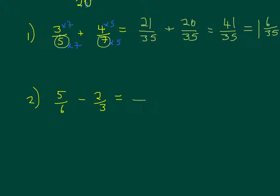For this one, my common denominator — if you picked 18 or 12 that would work, but actually 6 is the lowest common multiple because 6 is in the 6 times table and 3 is in the 6 times table. This 6 here has been times by 1, so it hasn't really changed — I don't need to change the 5, so that stays the same. This 3 has changed to 6, so I've times it by 2, meaning I need to times the 2 by 2: 2 times 2 is 4. Now my denominators are the same — 5 minus 4 is 1, so the answer is 1 over 6.